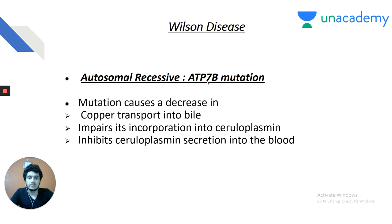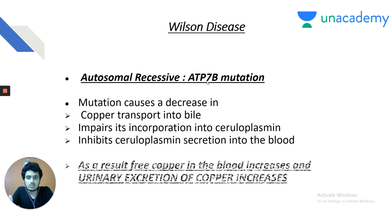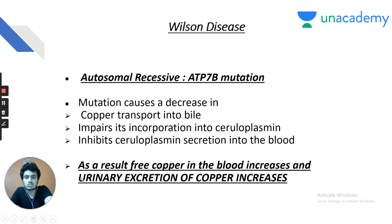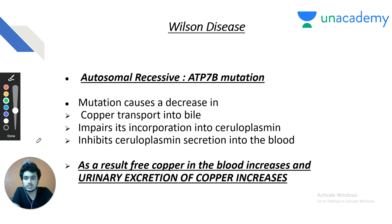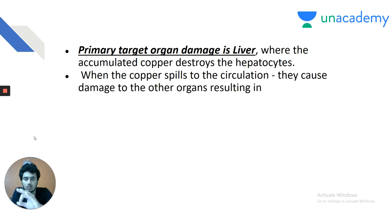The ATP7B mutation decreases copper transport in bile, impairs incorporation into ceruloplasmin, and inhibits ceruloplasmin secretion. Free copper in blood increases and urinary excretion of copper increases. Key MCQ: urinary excretion of copper is the single best test for diagnosis of Wilson's disease.